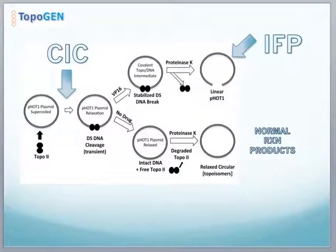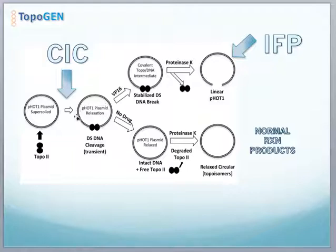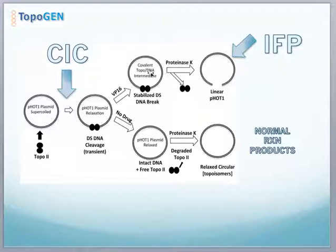This slide shows an overview of the topoisomerase II reaction mechanism with a plasmid. Topo II binds DNA in a scanning mode and searches for an affinity binding site, then engages the supercoiled DNA in a relaxation reaction to produce fully relaxed DNA. In the presence of so-called interfacial poisons, which we call IFP, the enzyme enters a covalent topo-DNA intermediate where the protein is covalently bonded to the break site. This is a stabilized double-strand break. When you add SDS, it traps the enzyme in a protein-DNA intermediate.